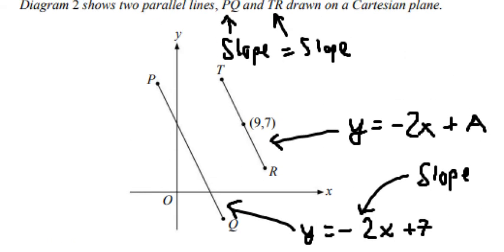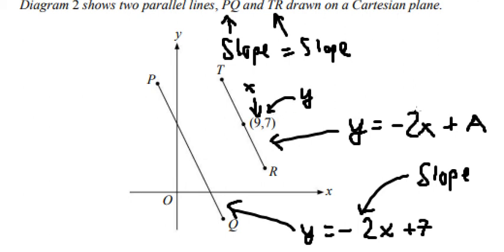Looking at the graph, we see that this line passes through the point (9, 7) — where 9 is the x-value and 7 is the y-value. So we substitute x equals 9 and y equals 7 into the formula so we can find the value of a.